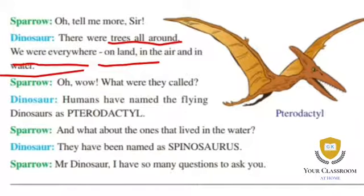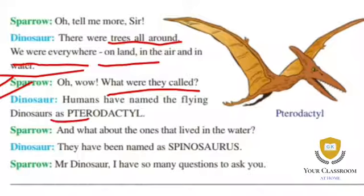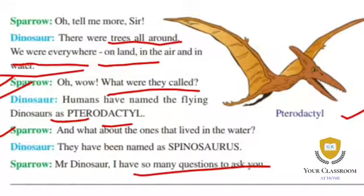Sparrow asked: what were they called? The dinosaur explained that humans have named the flying dinosaurs as pterodactyl. And the ones that lived in the water have been named Spinosaurus.